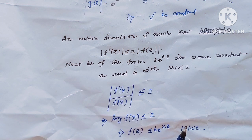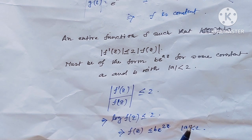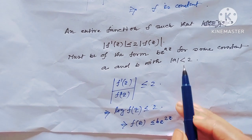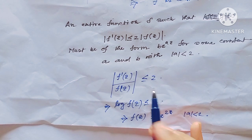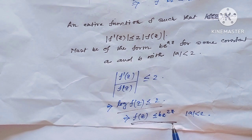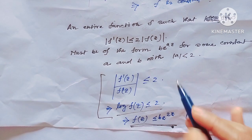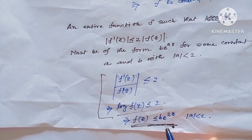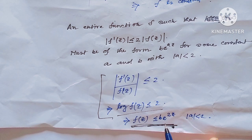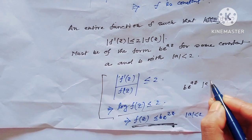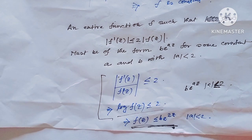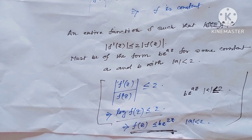Next example: an entire function F such that |F′(z)| ≤ 2|F(z)|. Then F must be of the form F(z) = B·e^{az} for some constants A and B with |A| < 2. This follows because |F′(z)/F(z)| ≤ 2, and after integrating, F(z) = B·e^{az}. I discussed this type of example elaborately in my previous video; today I am just reviewing it briefly.